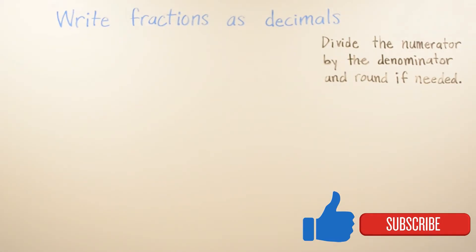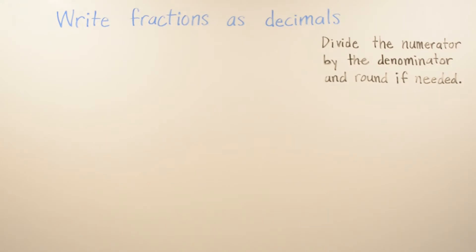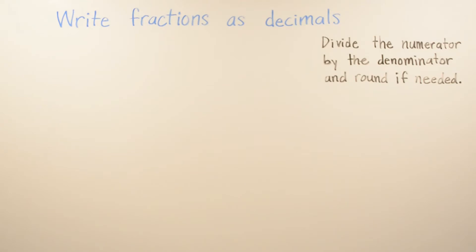In today's video we're going to be working on how to write fractions as decimals. You have two different ways to do it — I'm going to show you both. You can do it by division and you can do it by multiplication. Go ahead and do whatever is easiest for you. For the division part, you divide the numerator by the denominator and round if needed.